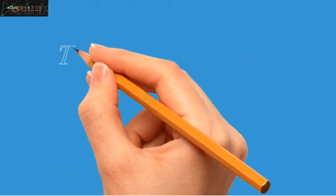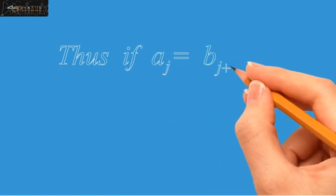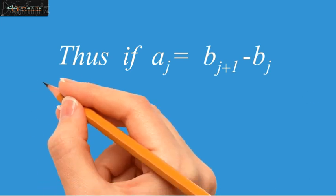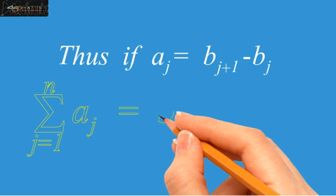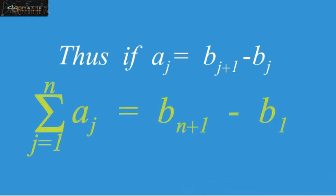Thus, if we have aj equals bj plus 1 minus bj, then after applying the summation, it will take the shape summation j varies from 1 to n, aj equals bn plus 1 minus b1.